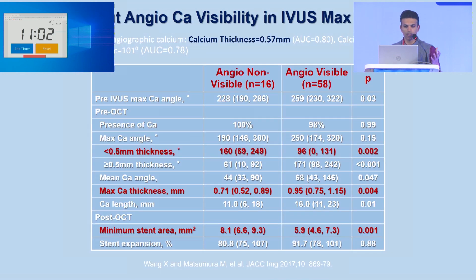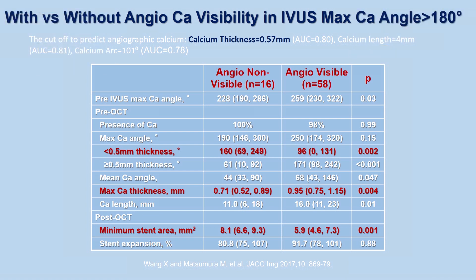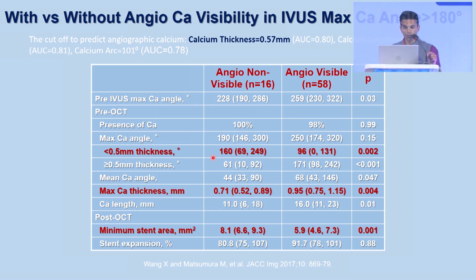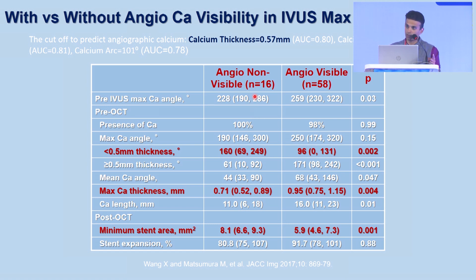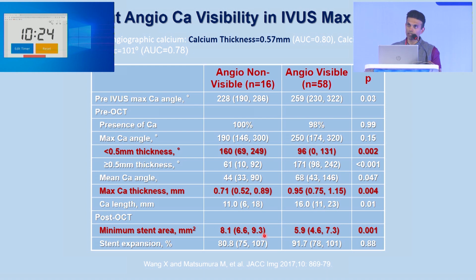Looking at a small series of patients with and without angiographic calcium — either you saw calcium or you didn't on the angiogram — what they found was that in the vast majority of patients where there was no calcium visible on the angiogram, the thickness was less than half a millimeter, so relatively thin. In these patients, you had good stent expansion. When you have thin calcium, even when it goes all the way around, if you can't see it on the angiogram at all, you're probably going to get good stent expansion. But if you do see some calcium on the angiogram, you don't know if you're thick or thin, arced or not arced — and that's where you need more information.